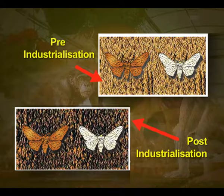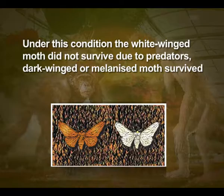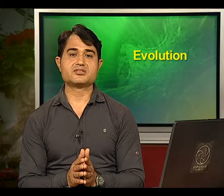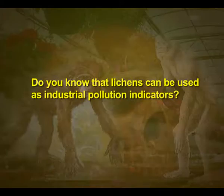The explanation put forth for this observation was that predators will spot a moth against a contrasting background. During the post-industrialization period, the tree trunks became dark due to industrial smoke and soot. Under this condition, the white-winged moth did not survive due to predators, while dark-winged or melanized moths survived. Before industrialization set in, thick growth of almost white lichens covered the trees; in that background, the white-winged moth survived while the dark-colored moths were picked out by predators.